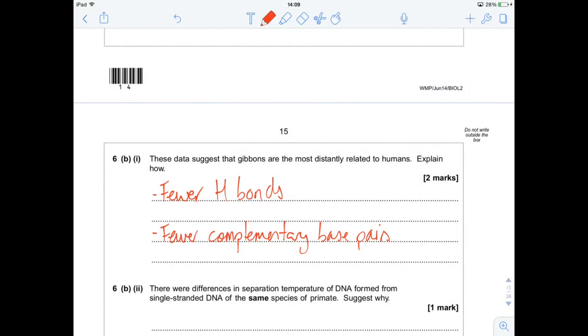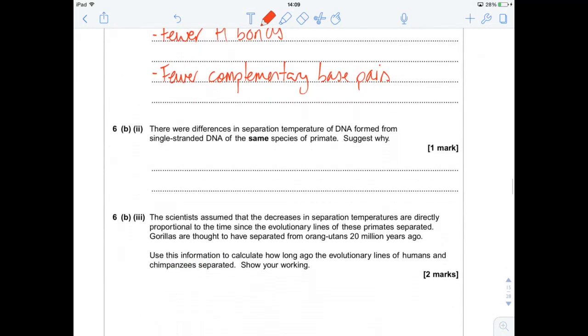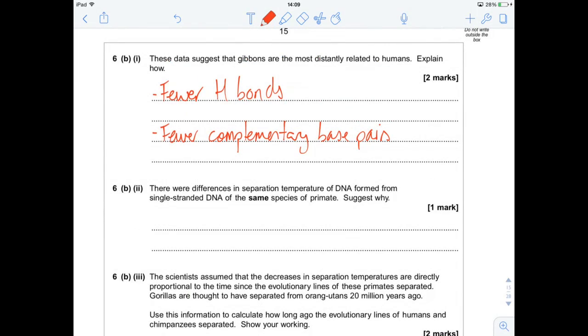These last couple of questions, there's the option to really over-answer these questions. But as long as you explain it clearly, you don't need to write a great deal at all. It says they would differences in separation temperature of the DNA formed from the single-stranded DNA of the same species of primate suggest why. Well, don't forget, you can have mutations, you can have non-coding DNA regions, different alleles, a bunch of repeats. So, any of those will get you an answer. I'm going to go for mutation, which is the easiest one, the sort of the cheats way out, really.